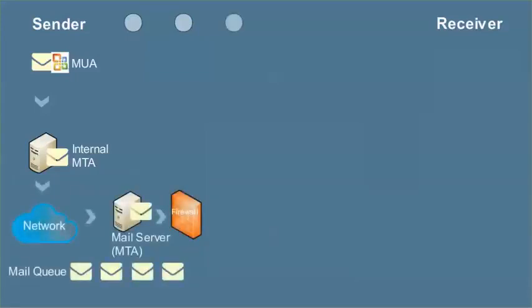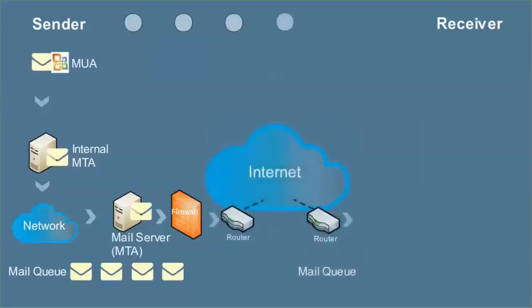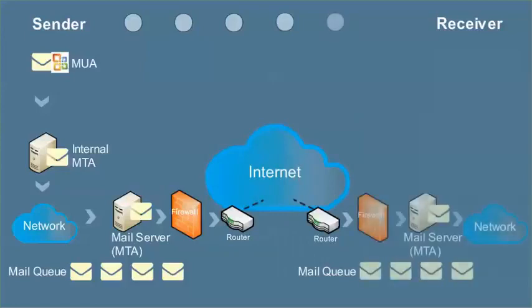Next, the internal MTA transfers your email to your mail server, which is also an MTA. Your mail server then transfers your message via the Internet to the receiver's mail server. The receiver's mail server transfers your message to the receiver's MDA for delivery to the receiver.